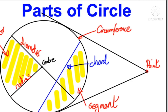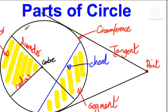Remember, one and only one tangent can be drawn to a circle at a point on its edge. We can draw tangents only from a point outside of the circle. I am very sure that now you all are familiar with the concept of circle and its parts. Now I will explain chord properties of a circle.